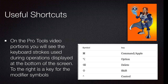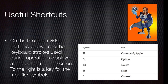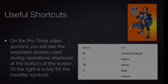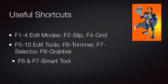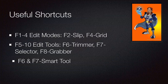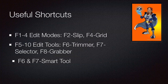My keystroke modifiers will be shown at the bottom of the screen. If you're on a PC, there's a guide to conversion at the end of this video. Here are some shortcuts you can use: the F keys 1 through 4 for the edit modes, and 5 through 10 for your edit tools. F6 and 7, or 7 and 8, will get you the smart tool.